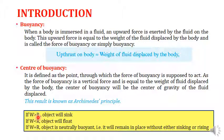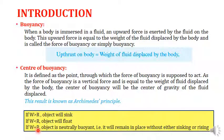This result is known as Archimedes' principle. If the buoyancy force is less than the weight of the body, the object will sink. If the weight of the body is less than the buoyancy force, the object will float on the surface. If both the weight of the body and the force of buoyancy are equal, the object is neutrally buoyant — it remains in place without either sinking or rising.